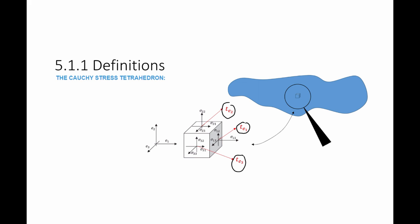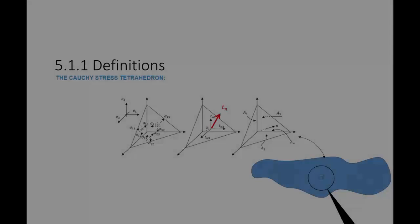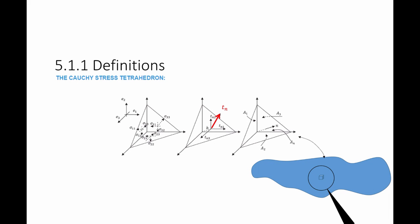Each of these traction vectors has three components. So Te1 has components σ11, σ12, and σ13, and so on. Knowing these traction vectors, I now look at a tetrahedron made of four surfaces: three surfaces perpendicular to E1, E2, and E3, and one surface perpendicular to a general vector n. The goal is to calculate the traction vector Tn on that general surface.